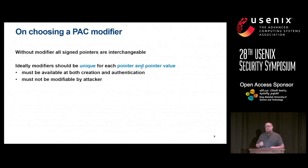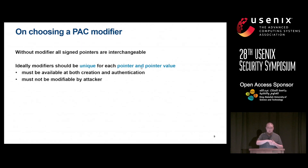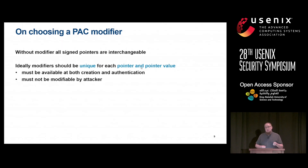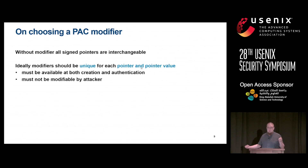The main design consideration is: what can we use as a modifier for these PA instructions? If we don't use a modifier at all, you can essentially do reuse attacks against any pointer. The opposite would be a unique modifier for each pointer value, which would prevent all reuse attacks. But we also need to be able to retrieve the same modifier at any use location in the code to verify it, and the modifiers must not be controllable by the attacker.